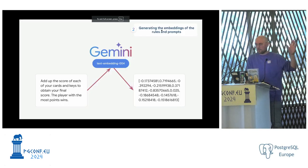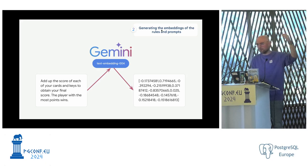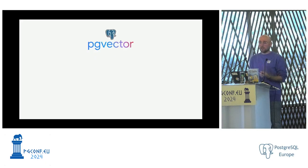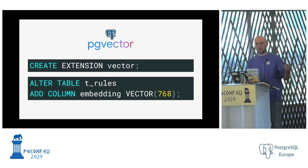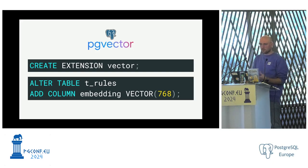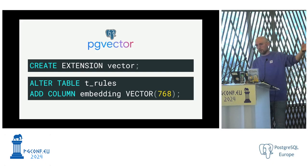We send the content of the rule to an embedding model and the embedding model gives us the vector. To store vectors we use Postgres with the pg_vector extension. pg_vector allows us to store and manipulate vectors — we get access to new data types such as the vector type, new operators, and new functions.